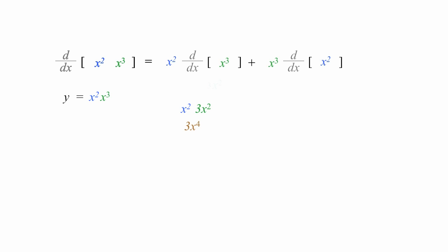plus x cubed times the derivative of x squared. The derivative of x squared is 2 times x to the first power. So I'm going to multiply x cubed times 2x to the first power. So I'm going to add the exponents. So I'm going to add 3 plus 1. So I have 2 times x to the fourth power.